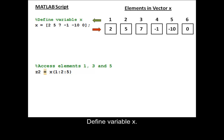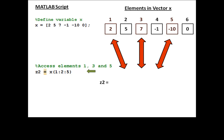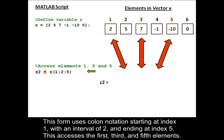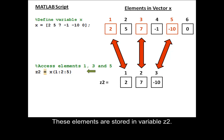Define variable x. This form uses colon notation starting at index 1, with an interval of 2, and ending at index 5. This accesses the first, third, and fifth elements. These elements are stored in variable z2.